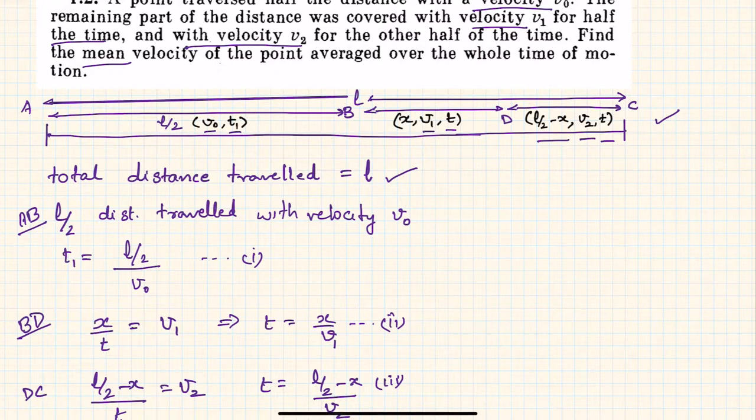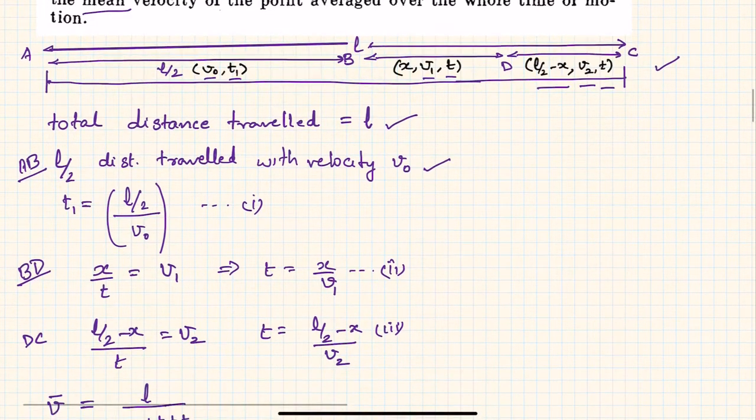AB is l/2 distance traveled with velocity v0, right? So t1 is nothing but distance upon speed, so t1 is l/2 divided by v0.